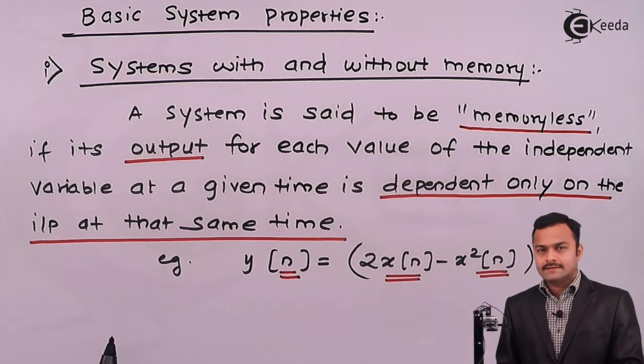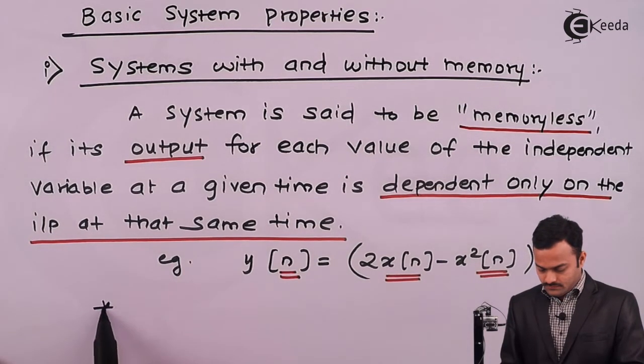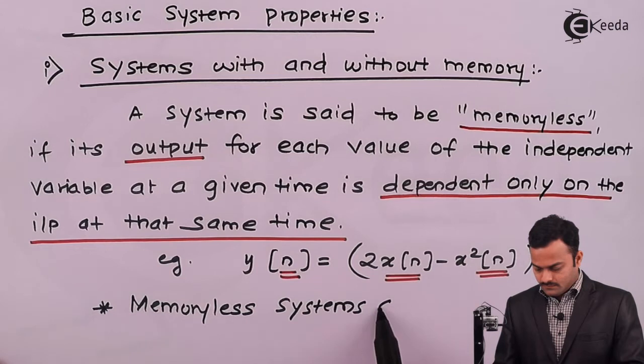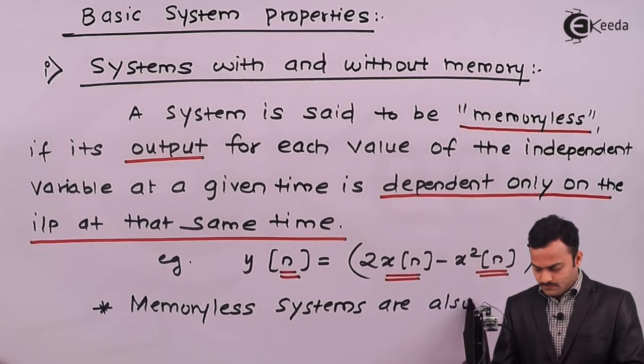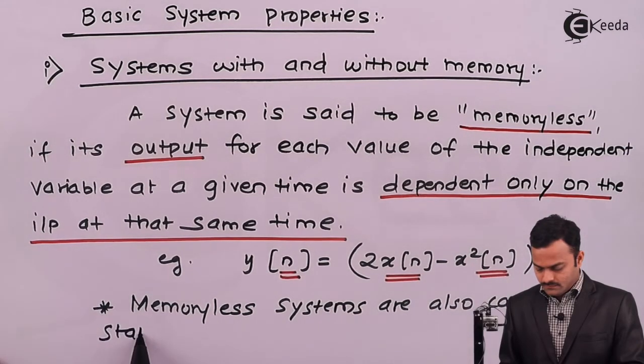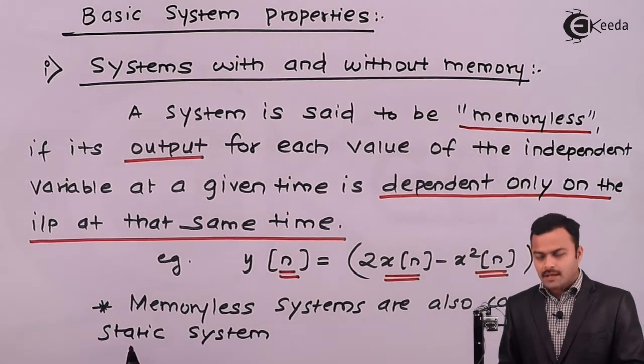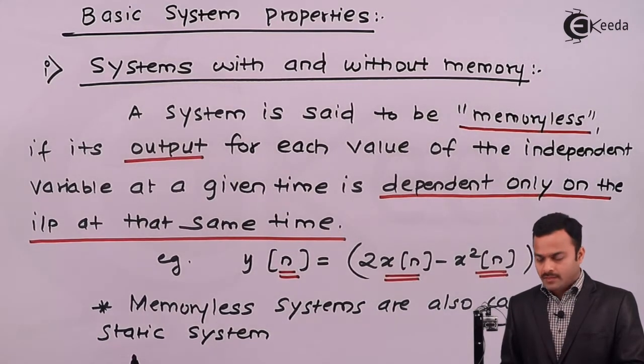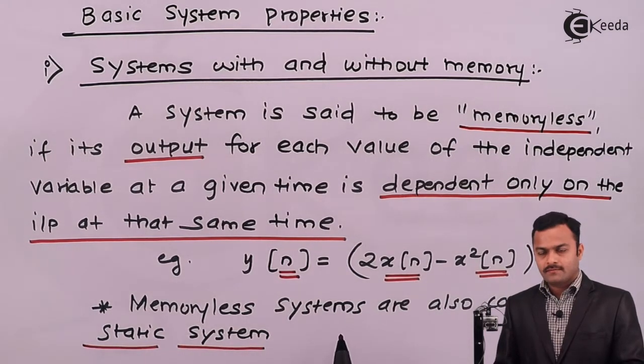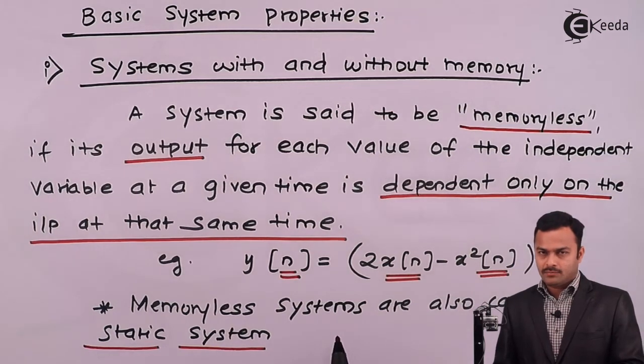Memoryless system is also called as static system. Sometimes we may use the word static system, it's nothing but a memoryless system. Memory is not required because output depends only on the input at that particular instant.